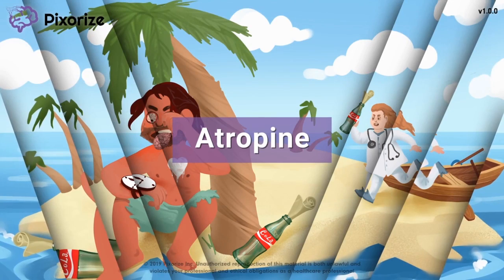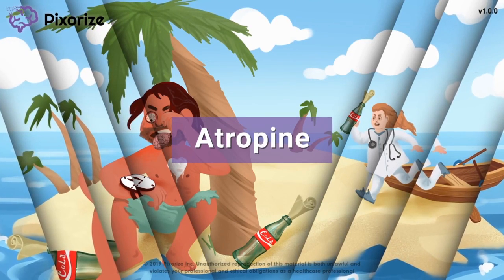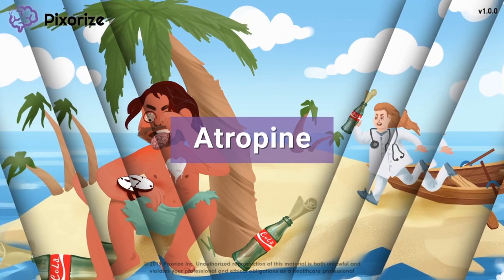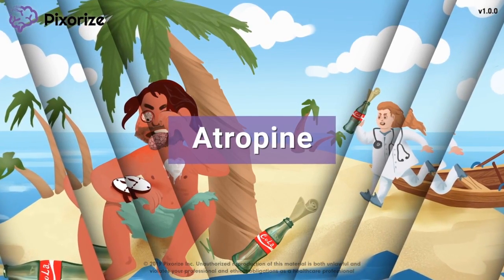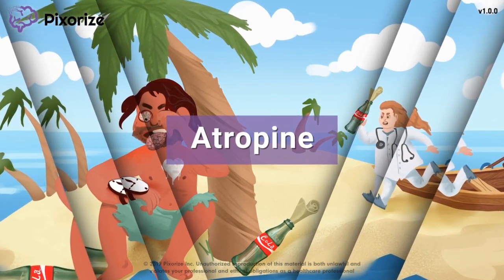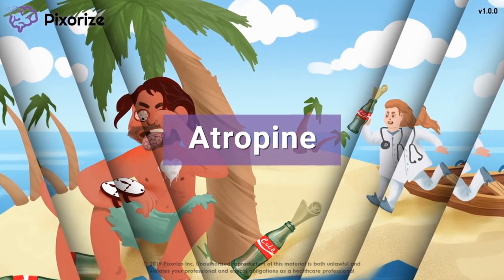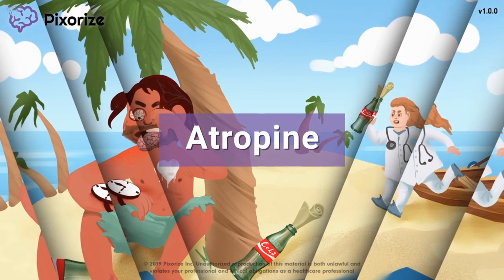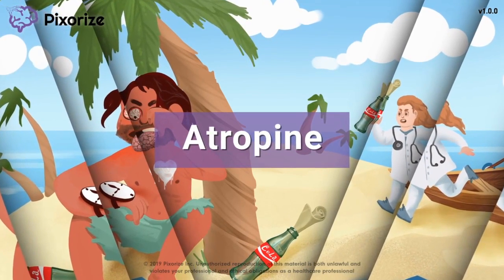Atropine is an anticholinergic agent that is used to treat cardiac problems like bradycardia and heart block and for reducing airway secretions in a variety of other clinical contexts. By inhibiting the actions of acetylcholine, atropine is a strong blocker of the parasympathetic nervous system which controls our rest and digest responses.